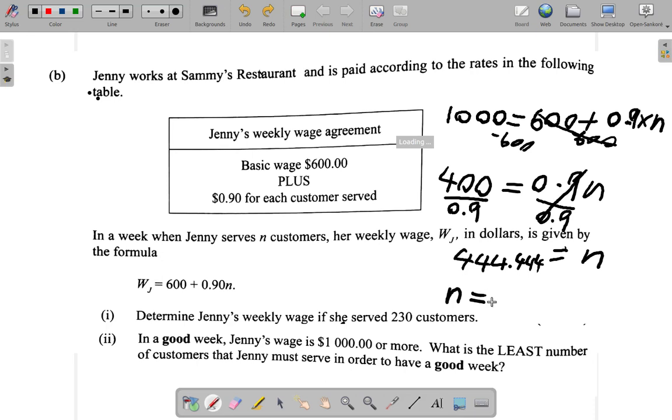So you need to round this number up to the next whole number. So she needs to serve 455 customers in order to have $1,000 or more. At least 455 customers. So the least number of customers to have a good week is 455 customers.